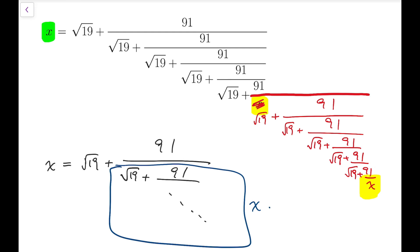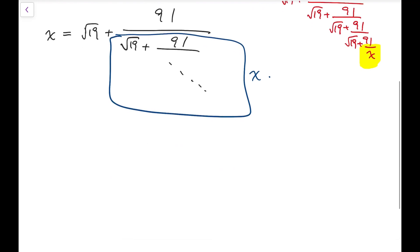So in that case, our equation is actually just simply equivalent to x equals square root of 19 added by 91 divided by x.